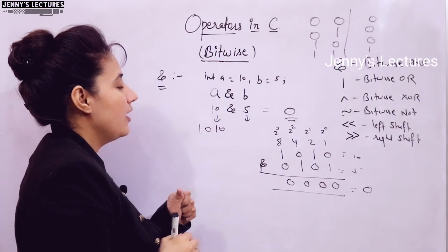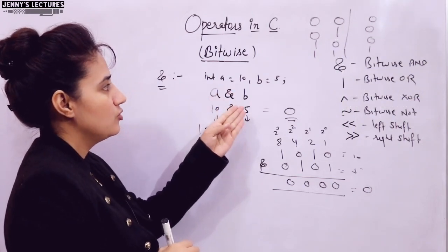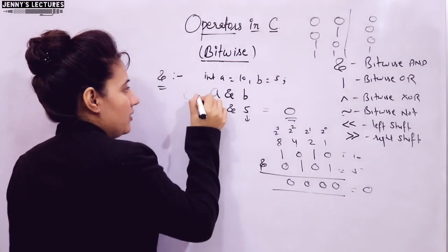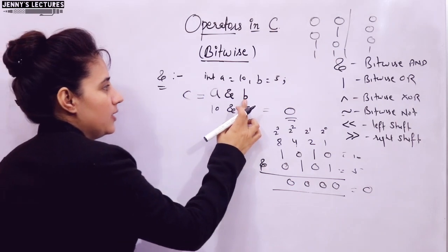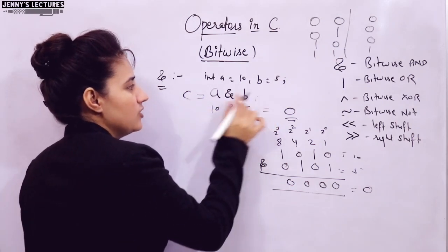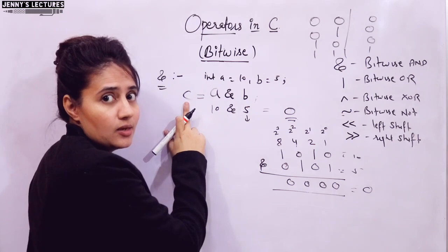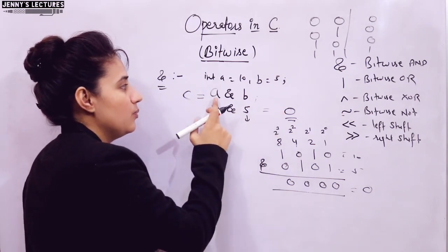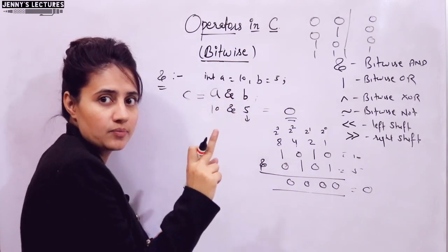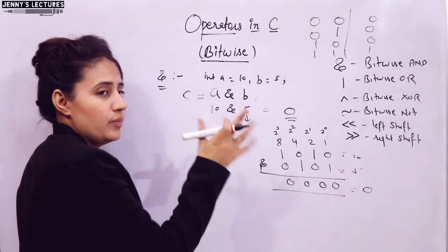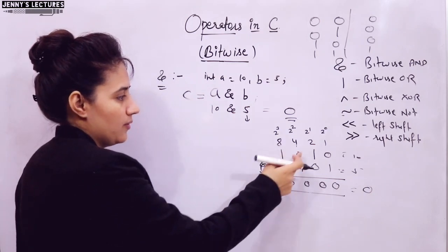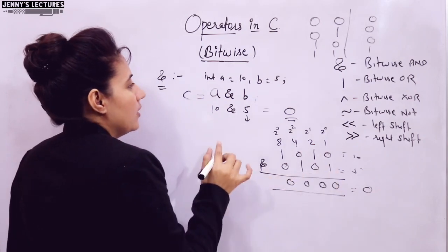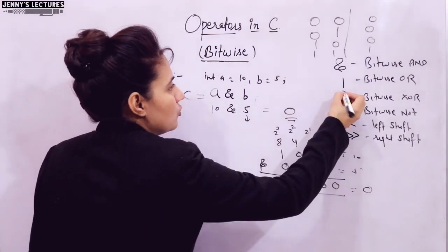That is the bitwise AND operator. We cannot perform these operators on negative numbers. If you store C = A & B, then each bit in C will be 1 only if the corresponding bits in both A and B are 1; otherwise the bit is 0. Here since no position has both bits as 1, the result is 0.